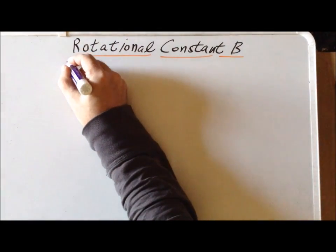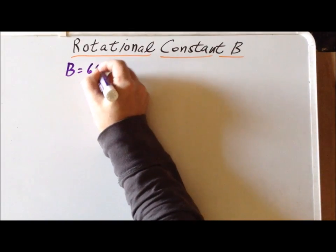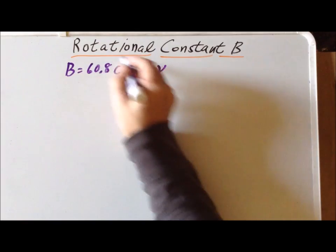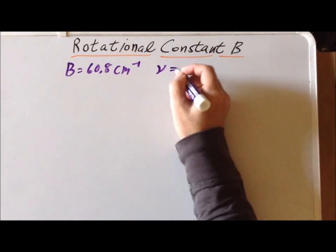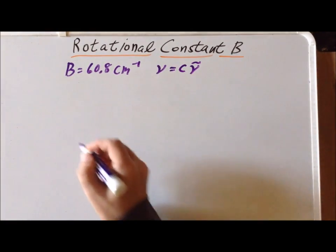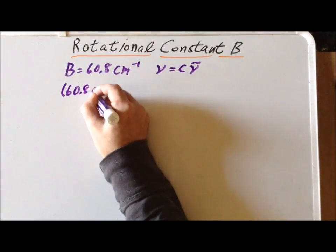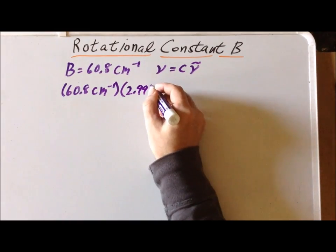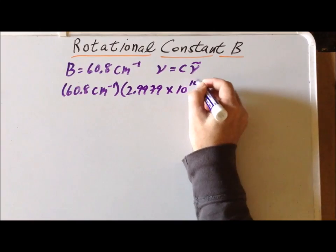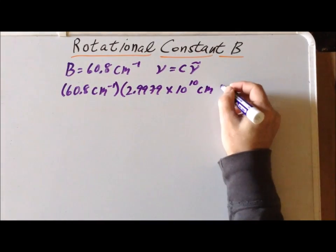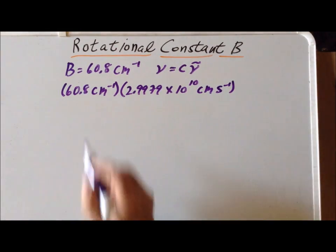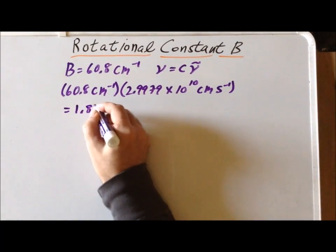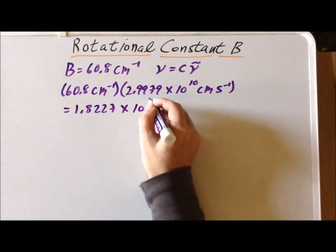The rotational constant B for H₂ is equal to 60.8 inverse centimeters. Recall that we can convert from wave numbers to a frequency by multiplying by the speed of light. So we have 60.8 inverse centimeters multiplied by the speed of light, 2.9979 times 10 to the tenth centimeters per second, because the rotational constant is in the form of inverse centimeters. This gives us a value of 1.8227 times 10 to the twelfth inverse seconds.